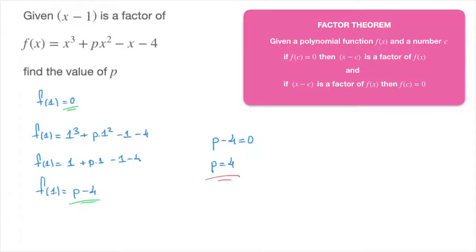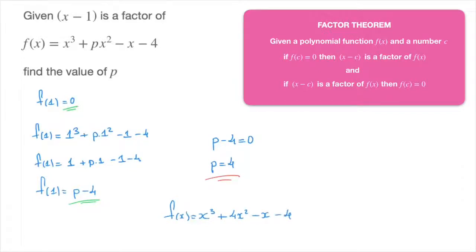And that's the answer — we've just found the value of the coefficient p. If needs be, we can go ahead and rewrite the polynomial as f of x equals x to the power of 3 plus 4x squared minus x minus 4.